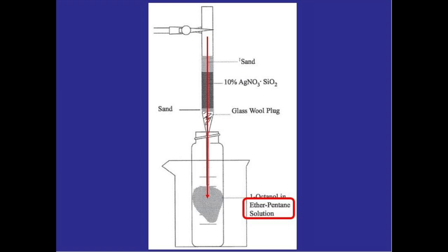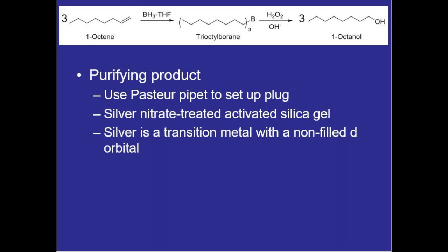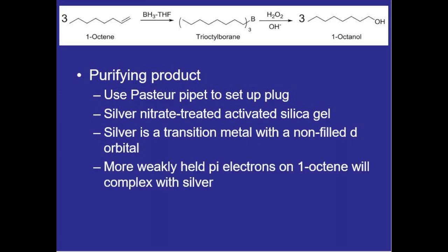The silver nitrate is crucial for this because if we use just normal silica gel which is a polar compound we would just be separating our two compounds based off of their polarity in which case octene being less polar would come out of the plug first, would enter the conical vial and just be sitting there when the actual product octanol came through and would contaminate it all over again. But silver is a transition metal with a non-filled d orbital so when we elute the column the more loosely held pi electrons on the one octene will actually complex with the silver allowing the one octanol to elute out of the column by itself.